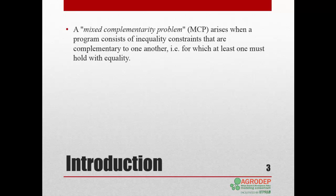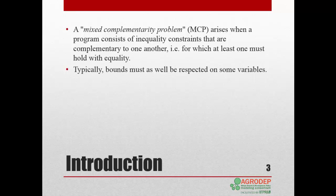A mixed-complementarity problem is a type of problem solving a system of equations which contains equality and inequality constraints, and requires a one-to-one complementarity between the equations, in which at least one equation must hold with equality. Expressed another way: the variable is non-zero if the associated constraint is strictly binding, and the variable is zero if the associated constraint is non-binding. Bounds must also be respected on some variables.